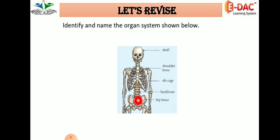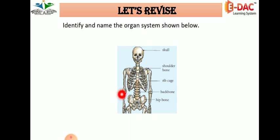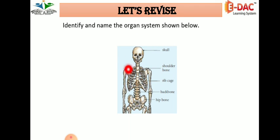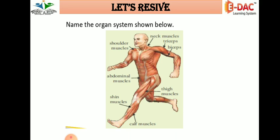Next — which system is this? Skull, shoulder bones, ribcage, backbone, hip bones — which system is it? Identify. It is the skeletal system.